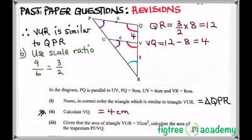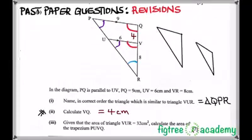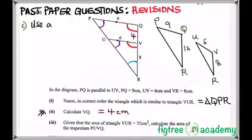We use the area ratio, which is a square of the scale ratio, to find the area of the large triangle QPR. Therefore, given that this is 32 square centimeters, we want to find this, then we have corresponding sides 9 and 6. The ratio now, with the scale ratio, we want to use the area ratio.